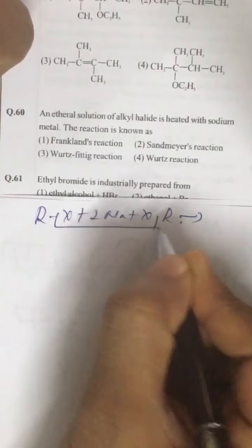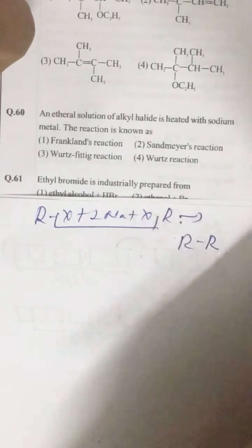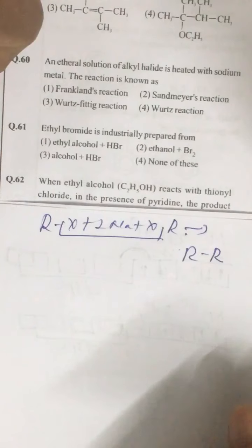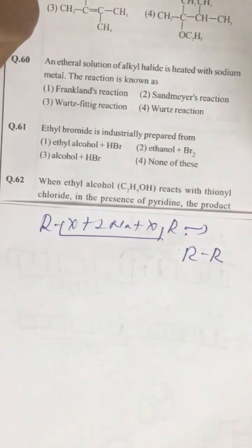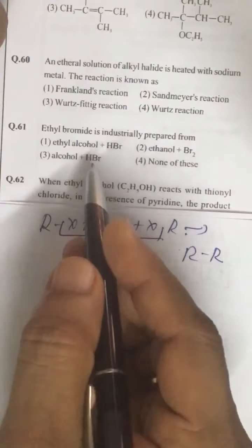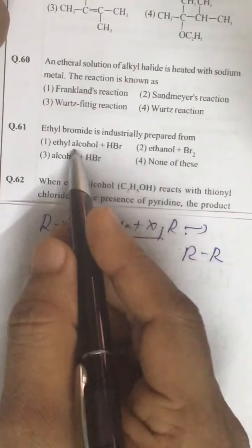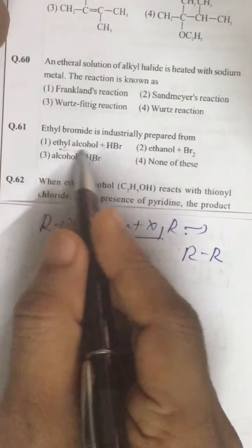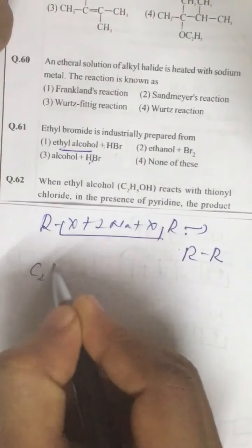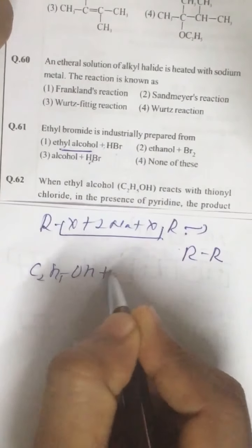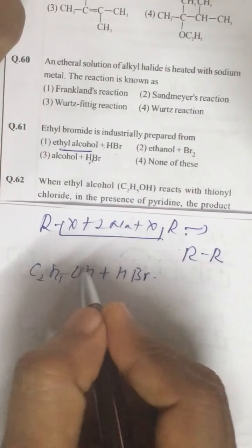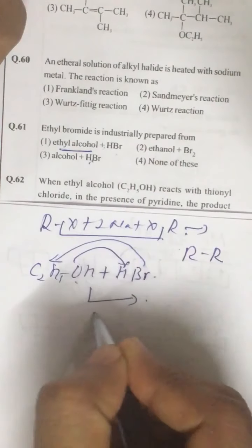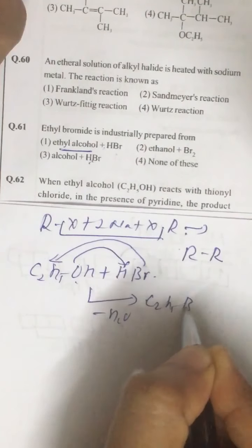Question number 61. Ethyl bromide is industrially prepared from ethyl alcohol plus HBr. If you want to prepare ethyl bromide, so this is C2H5OH plus HBr. This is the removal of H2O and Br attacks on this, this is the removal of H2O and we get C2H5Br like this.